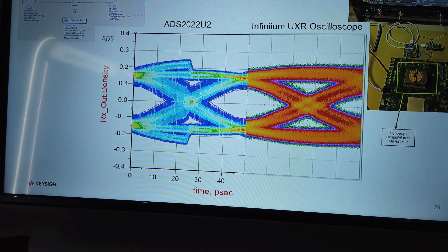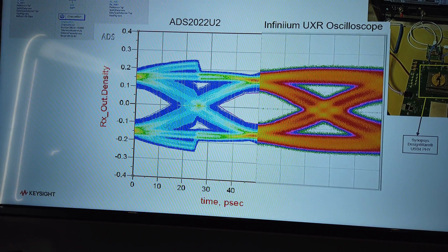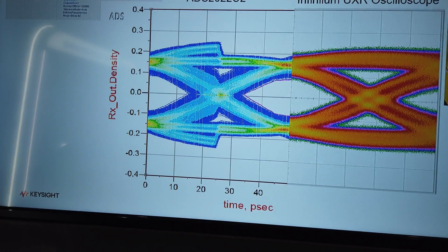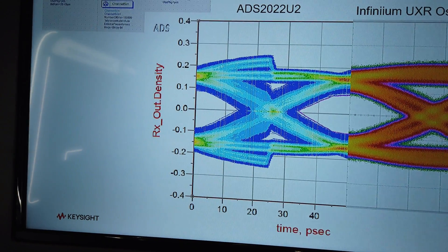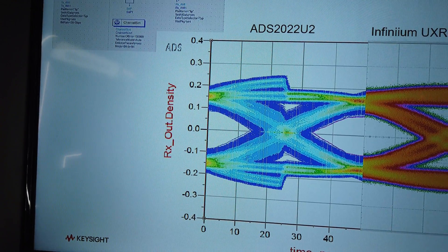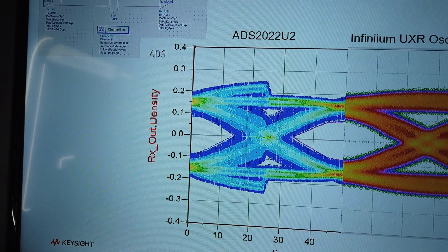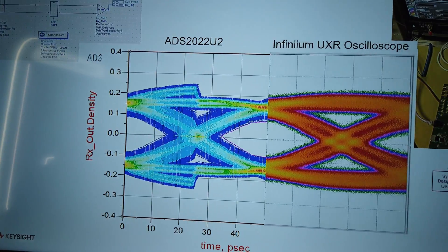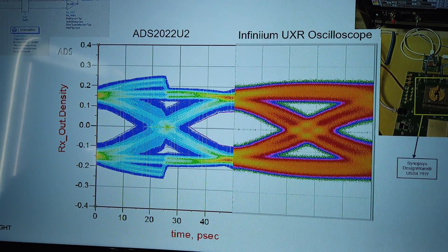On the left is actually a simulation with ADS using your IBIS AMI models that shows the eye on a long channel test case. And on the right, the measurements on a scope.